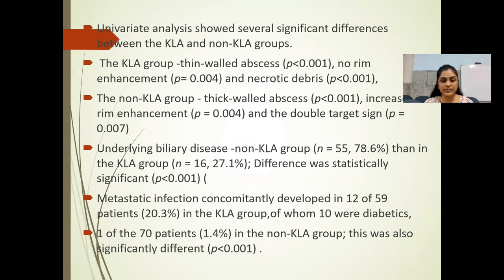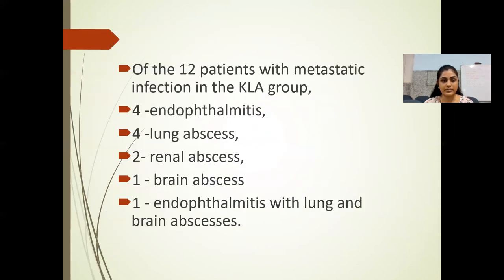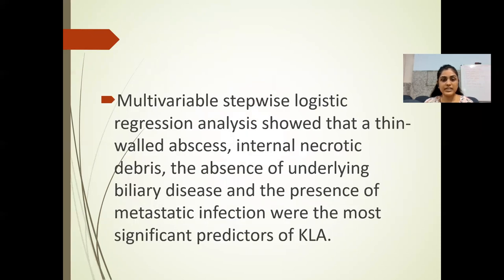Metastatic infection concomitantly developed in 12 of 59 patients in the KLA group, of whom 10 had diabetes, compared to only 1 of 70 patients in the non-KLA group — also a significant difference. Of the 12 KLA patients with metastatic infection: 4 developed endophthalmitis, 4 developed lung abscess, 2 renal abscess, 1 brain abscess, and 1 patient developed endophthalmitis with lung and brain abscess. Multivariate stepwise logistic regression analysis showed that thin-walled abscess, internal necrotic debris, absence of underlying biliary disease, and presence of metastatic infection were the most significant predictors of KLA.